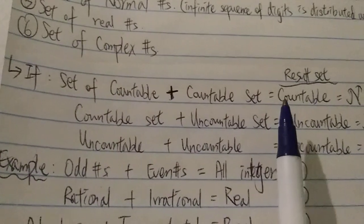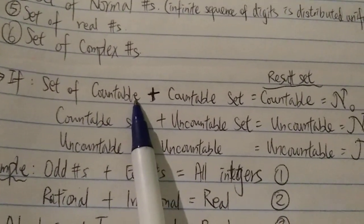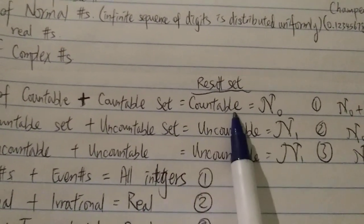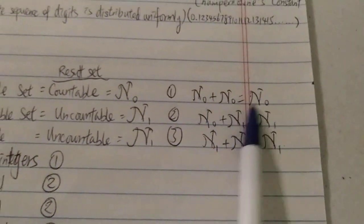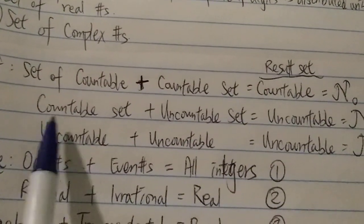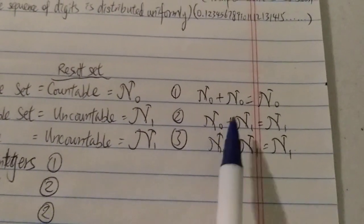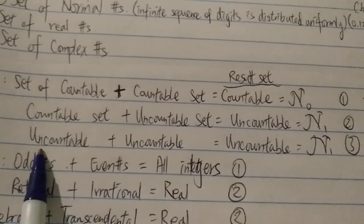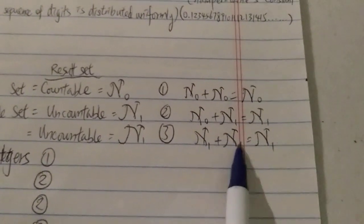Here are some rules to determine why some sets are countable and some are uncountable. Rule 1: a countable set plus a countable set gives a countable set — countable plus countable equals countable. In other words, aleph-0 plus aleph-0 equals aleph-0. Rule 2: countable plus uncountable equals uncountable — aleph-0 plus aleph-1 equals aleph-1. Rule 3: uncountable plus uncountable equals uncountable — aleph-1 plus aleph-1 equals aleph-1.